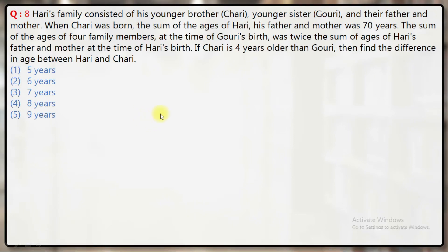Hari's family consisted of his younger brother Chari, younger sister Gauri, and their father and mother. When Chari was born, the sum of the ages of Hari, his father and mother was 70 years. The sum of the ages of 4 family members at the time of Gauri's birth was twice the sum of the ages of Hari's father and mother at the time of Hari's birth. If Chari is 4 years older than Gauri, find the difference in age between Hari and Chari.